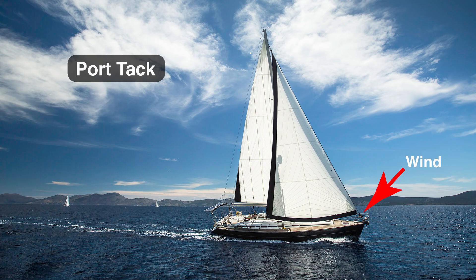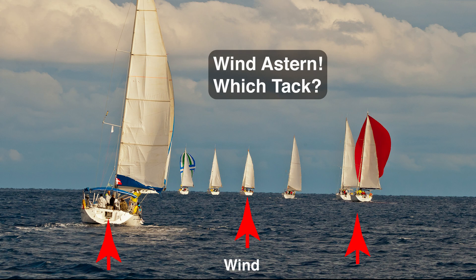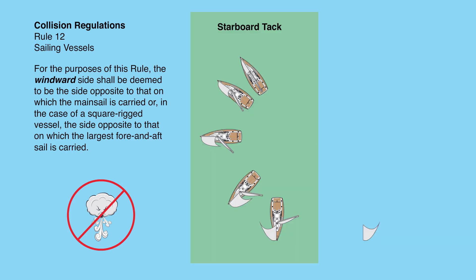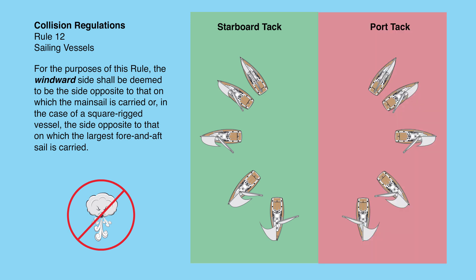This is correct up to a point. What happens when the wind is astern? The boats in this picture, by the way, are all on port tack. The correct way to determine a vessel's tack is defined in the Collision Regulations Rule 12. The windward side of a boat determines the tack, and by definition, the windward side of a sailboat is the side opposite the mainsail. Where the wind is coming from is technically irrelevant. So these boats are all on starboard tack. The mainsail is off to port, and these are on the port tack.